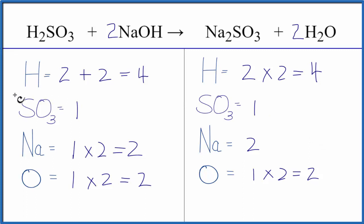So by counting this sulfite ion, this SO3 ion here, because it appears on both sides, that makes it a good bit easier to balance this equation.